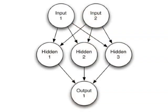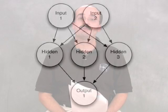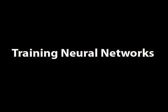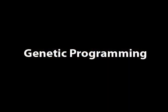Class 4 will continue with feed forward back propagation neural networks. You can see a feed forward neural network here. The feed forward neural network is one of the most commonly used neural network formats available. Back propagation is actually a method used to train neural networks, however it is not the only method available.